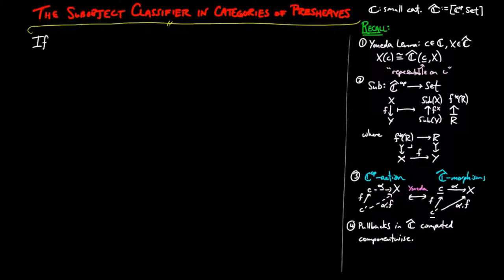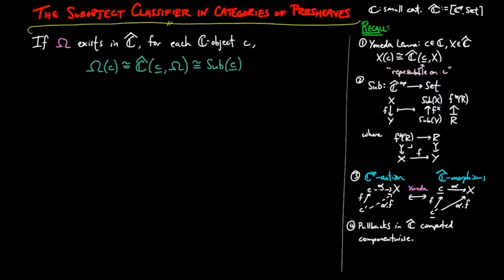We start with the observation that if the sub-object classifier exists in C-hat, then for each C-object, little c, there is an isomorphism from the C figures in the sub-object classifier to sub-objects of the representable on C. So we are forced to define omega as sub-Y-op, where Y-op is the Yoneda embedding on the opposite categories, and sub is the functor described in (2) on the right.